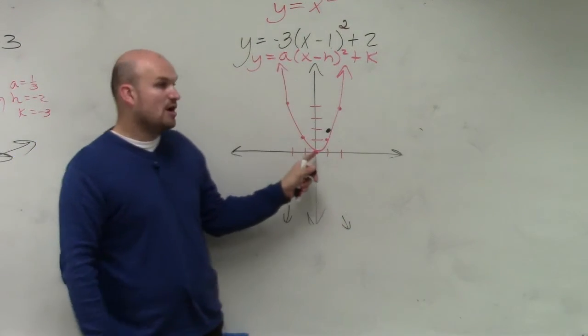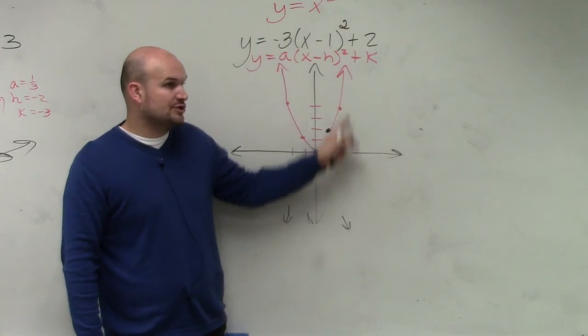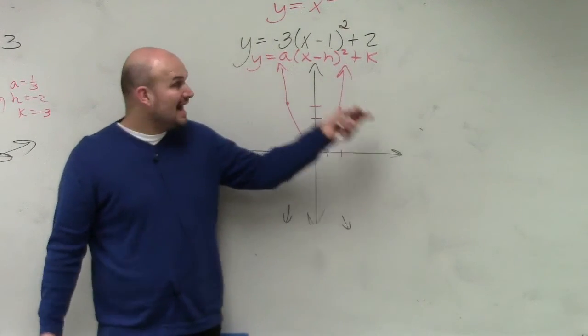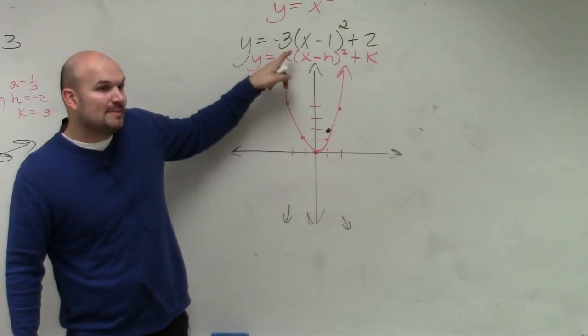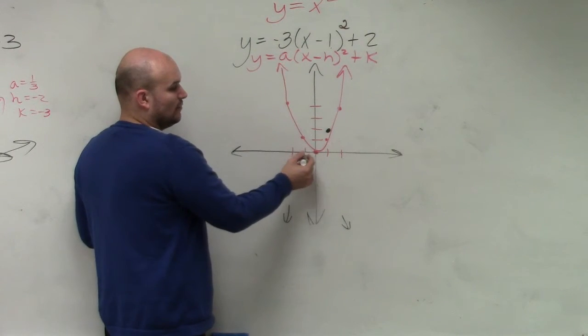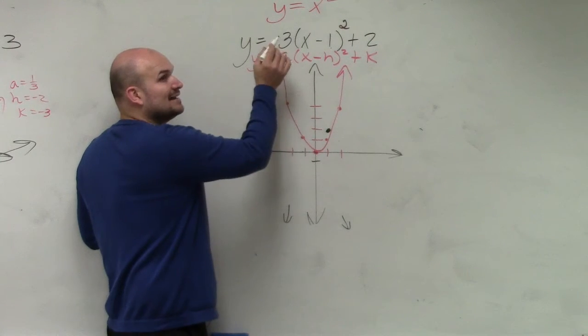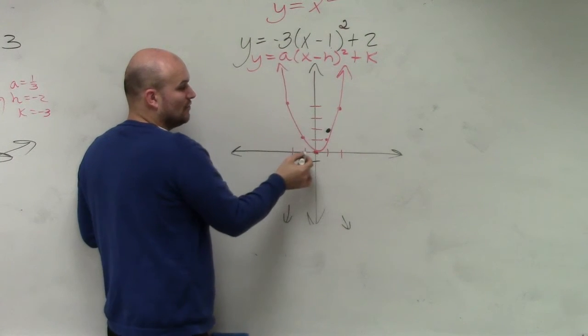Now, what does this 3 do? Now, typically, we always went over 1, up 1, over 2, up 4. Well, now we need to multiply that by 3. And we're going down. So instead of going over 1, down 1, we're going to go over 1, down 1 times 3. So it's over 1, down 3. 1, 2, 3.